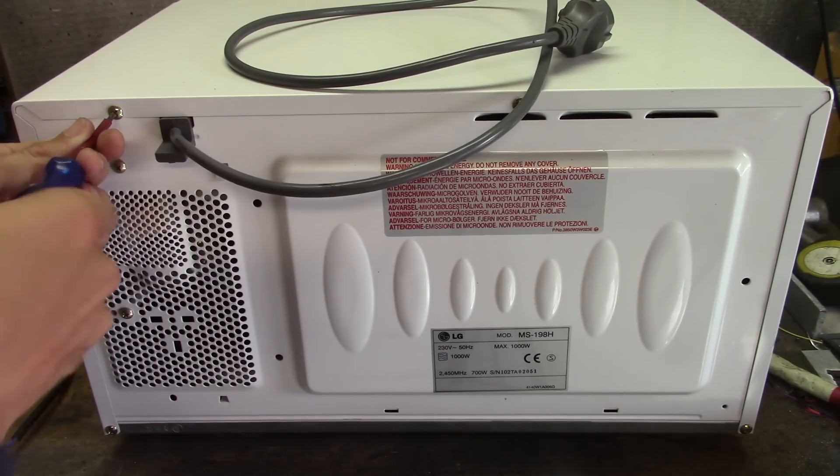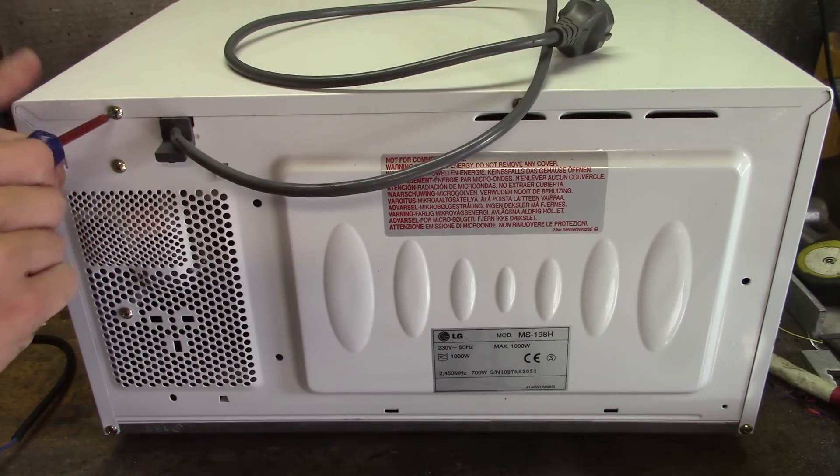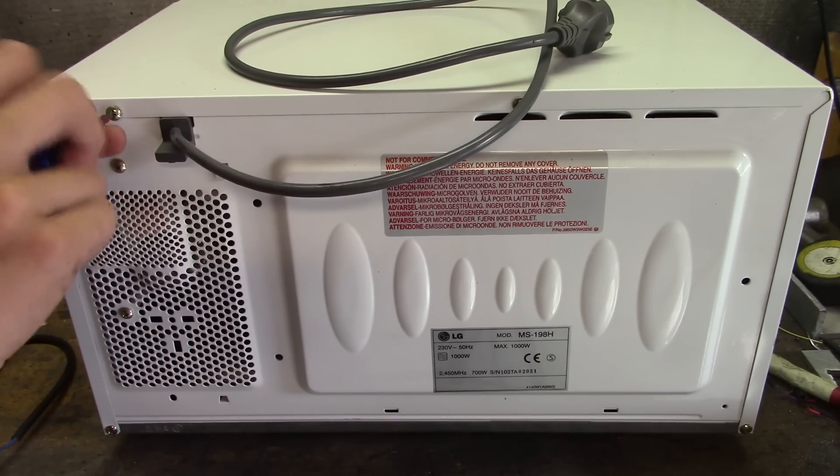Start off by taking out all of the screws after which you can take off the entire top panel of the microwave.